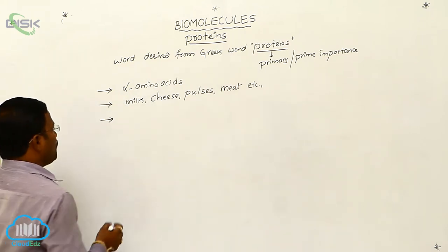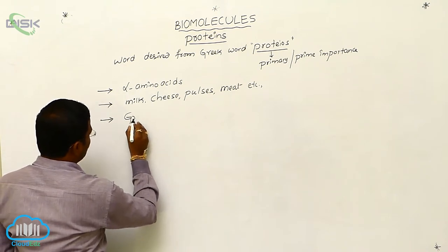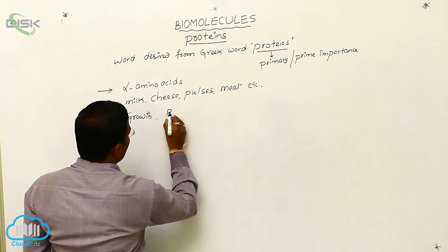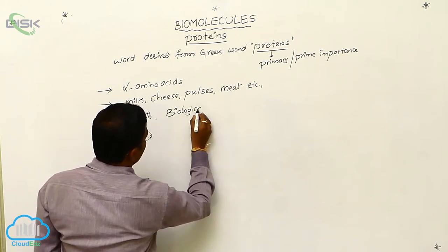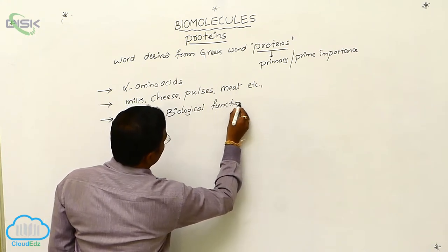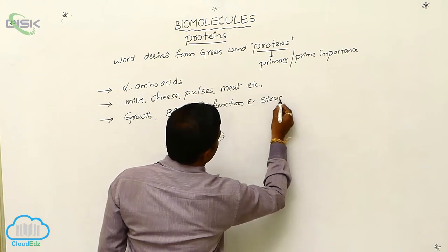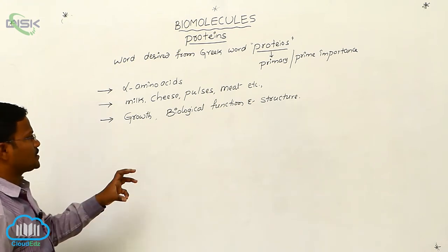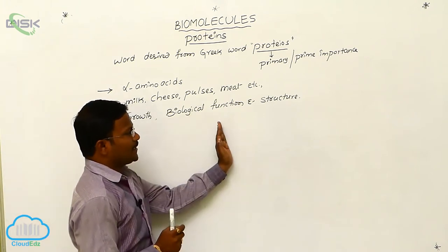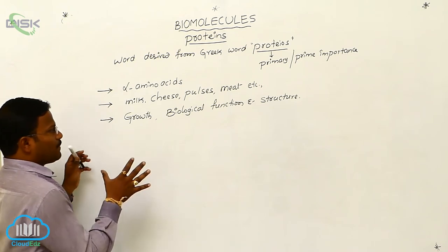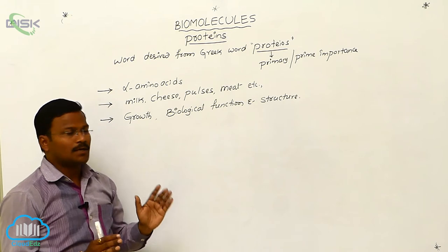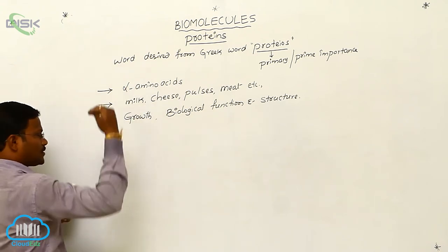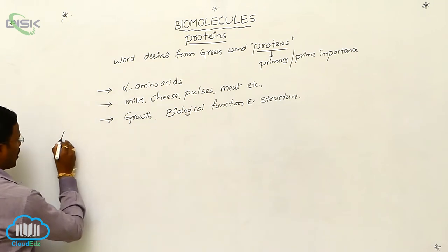Proteins are important to regulate growth and to maintain biological functions and structures. Simply put, proteins are the fundamental building blocks that maintain the biological functions and structures of a living organism's body. Since all protein molecules are polypeptides made up of alpha amino acids, under the heading of proteins we need to learn about amino acids.